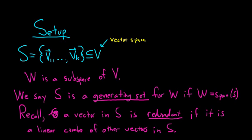So S is a generating set if it generates W. So if the span of S is equal to W and a vector in S is redundant, we can throw it away if it's a linear combo of other vectors in S.